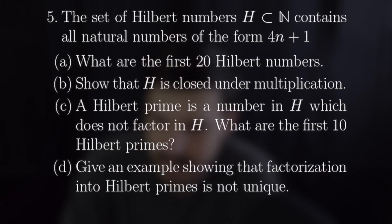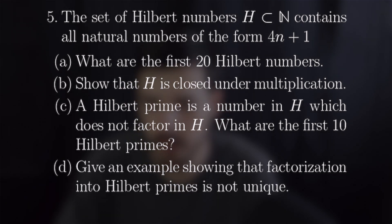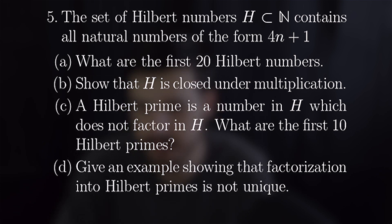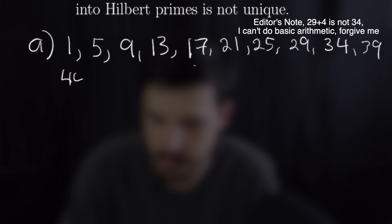For number five we're going to be going over Hilbert numbers. So we have a definition for Hilbert numbers: the set of Hilbert numbers which is a subset of the natural numbers contains all natural numbers of the form 4n plus 1. For part a it's asking what are the first 20 Hilbert numbers. Well that's going to be pretty easy we can just plug in our natural numbers there and each one will be separated by four so starting with one we will have 1, 5, 9, 13, 17, etc all the way up to 81.